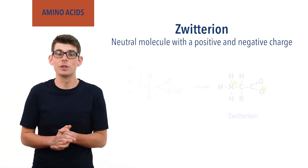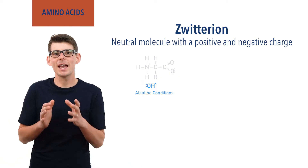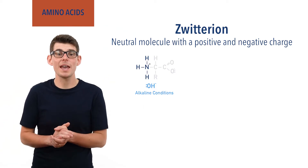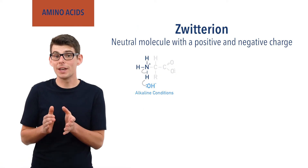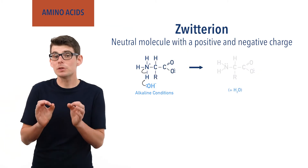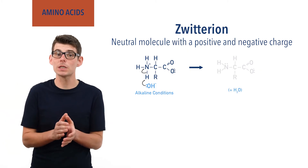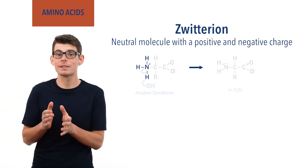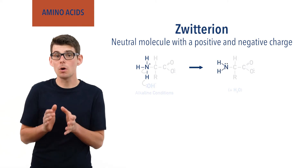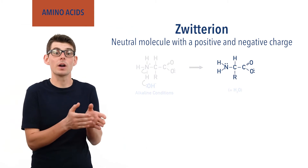If placed into an alkaline solution containing hydroxide ions, the NH3+ part of the zwitterion will lose an H+ ion and act as an acid, reacting with the OH- ions to form water. The amino acid will no longer be a zwitterion as the ammonium group loses its positive charge and becomes NH2 again, meaning the molecule now has an overall negative charge from the carboxylate group.